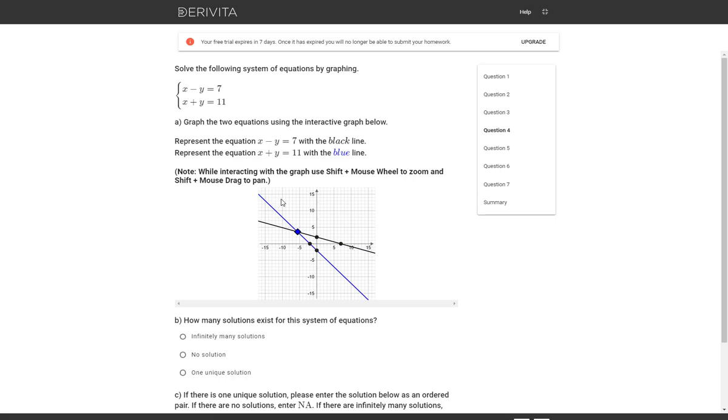Now the y-intercept is at negative 7. So I'm going to grab that and drag it down to negative 7. There, I think I'm right on top of it now. It's hard to read a little bit.